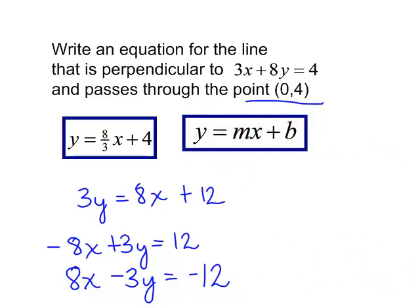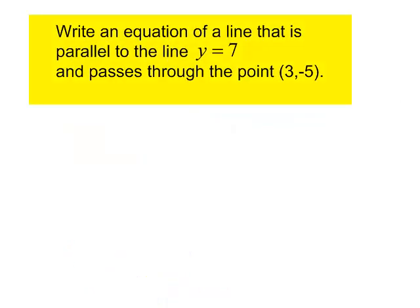Let's try one more. Write an equation of a line that is parallel to the line y equals 7 and passes through the point (3, negative 5). You should be able to write the equation of this line without a lot of calculation.